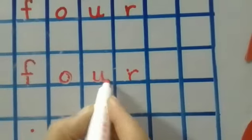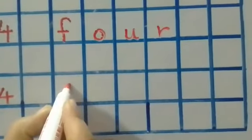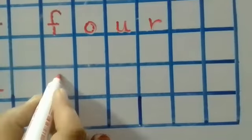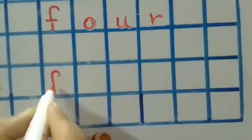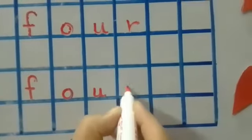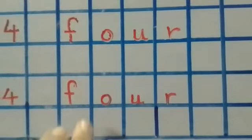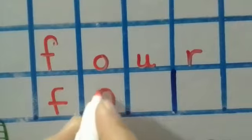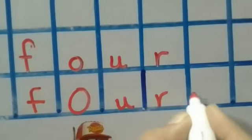F-O-U-R 4. The size of letters O, U, and R should be the same. Okay? Please don't write like this — this is the wrong way of writing.